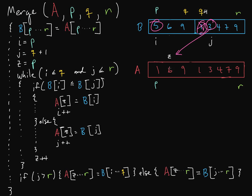So we copy down three instead. Again, we need to increment some of these markers. And we're done with three.